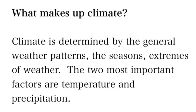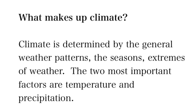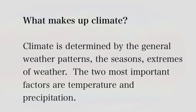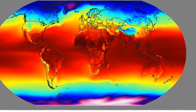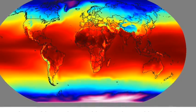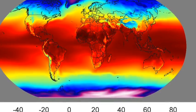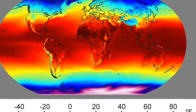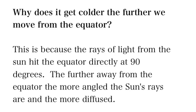Climate you're probably a little more familiar with. What determines that? Weather patterns, seasons, the extremes of weather, storms. But the really big two are temperature and the amount of precipitation. Those are the two things that really define the climate of an area.